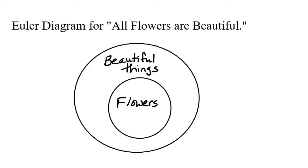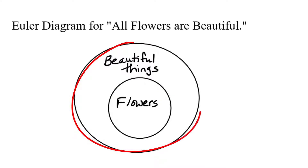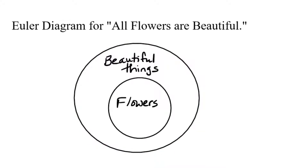In other words, we're going to draw pictures of the statements. For example, the statement 'all flowers are beautiful' can be drawn using a circle to represent anything that qualifies as a flower and a circle to represent anything that qualifies as beautiful. And since all flowers are in the category of beautiful things, we put the circle representing the flowers inside of the beautiful things circle.